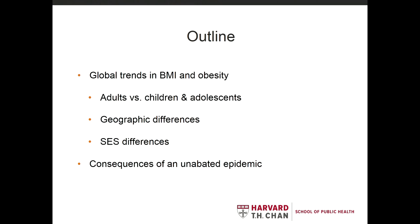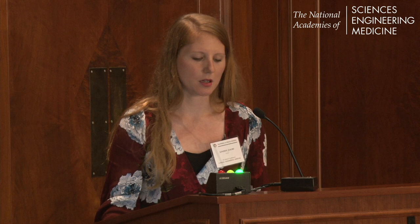I'll start out by looking at some global trends in BMI as well as in obesity, and describe some of the contrasts we're seeing between adults and children around the world. I'll talk about geographic differences — much of my work is in South Asia, specifically India, Nepal, and Bangladesh, with some work in China. I'll also discuss SES differences, thinking about disparities in obesity globally, and close with a couple of recent updates on consequences of an unabated obesity epidemic.